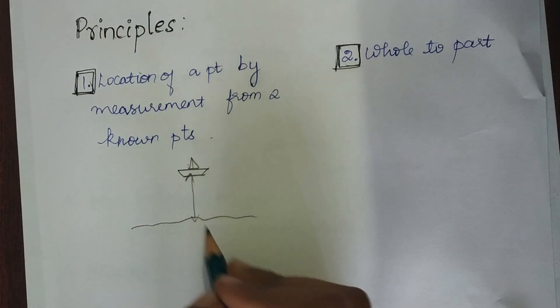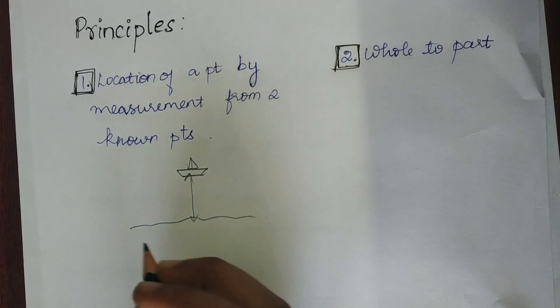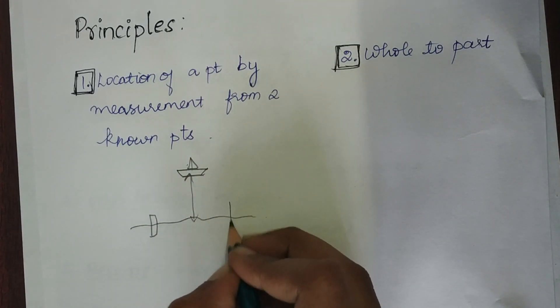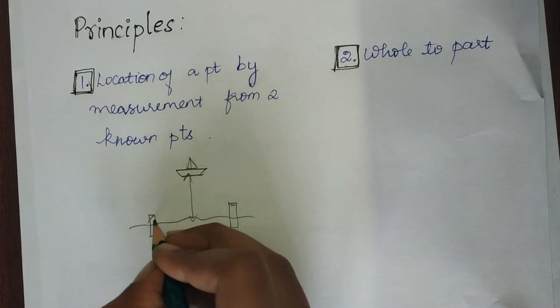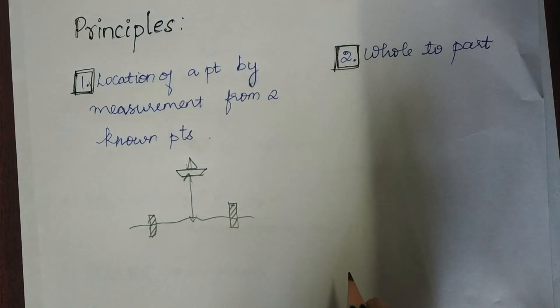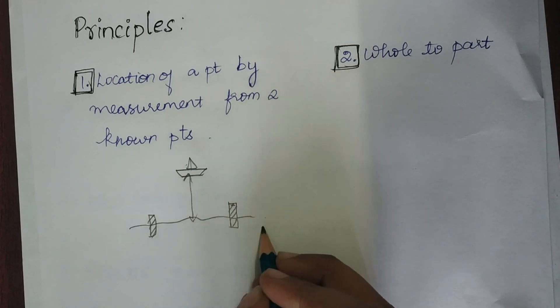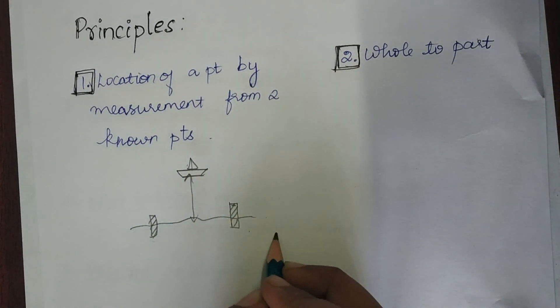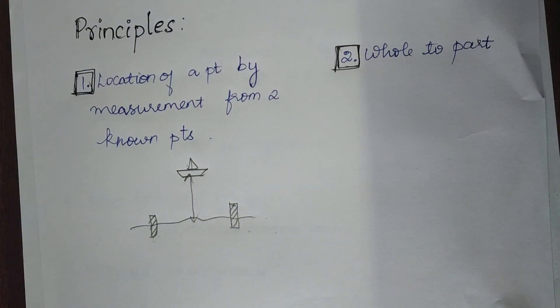In order to find it, you have to establish two control points. Control points are those whose properties you know completely - you know the level of them, the distance between the two control points, and you know all these information with high precision.